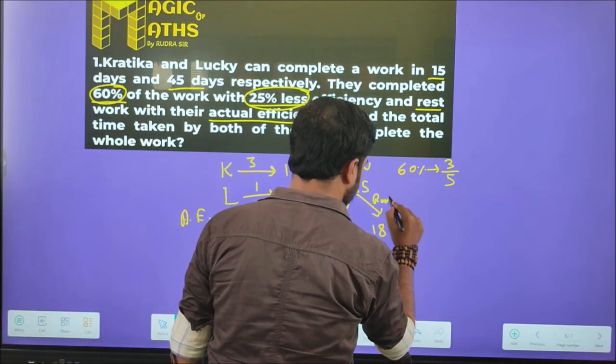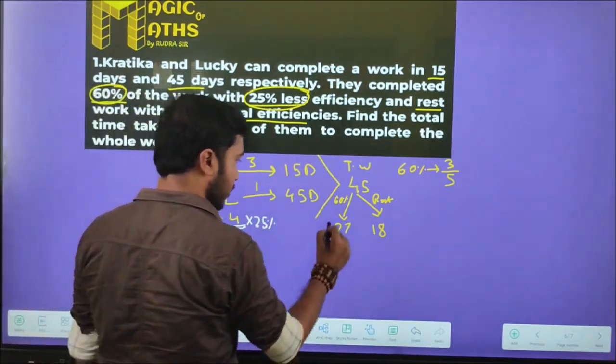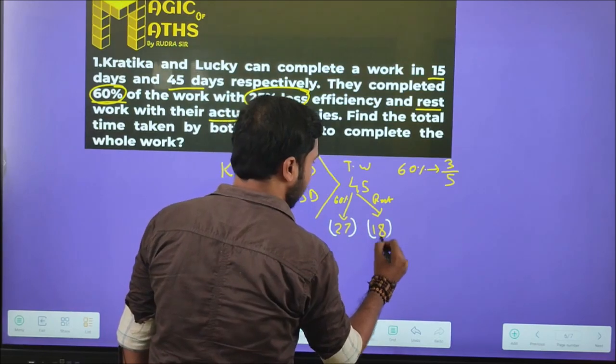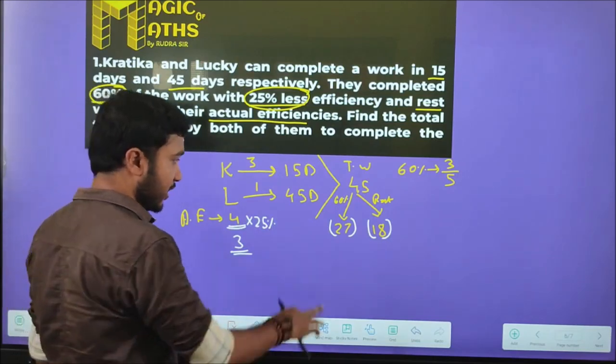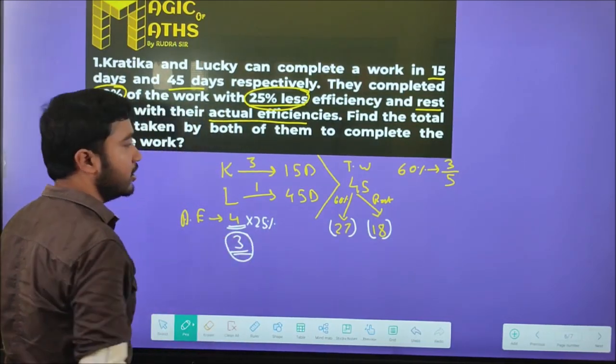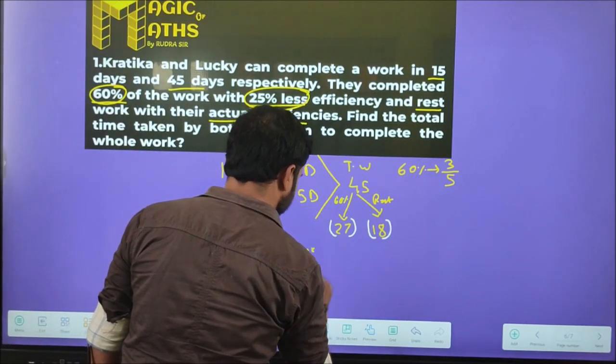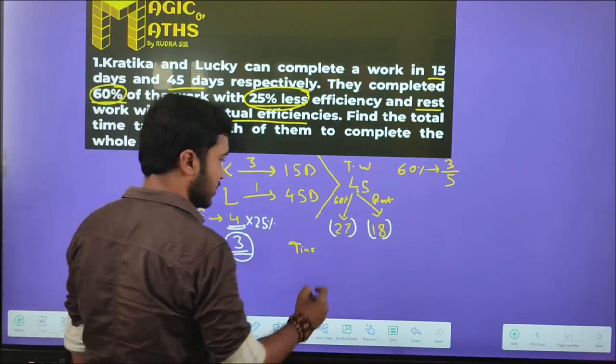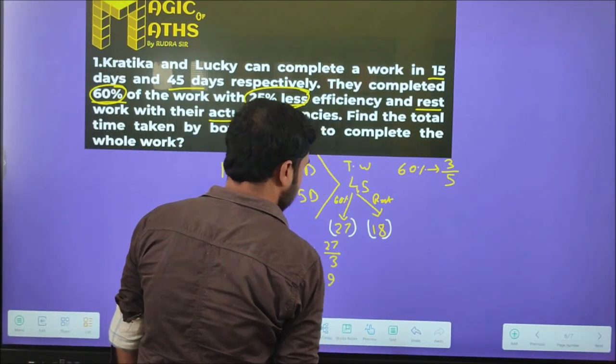The 60% work at less efficiency of 3. So the time is total work 27 divided by efficiency 3 equals 9 days. 9 days.